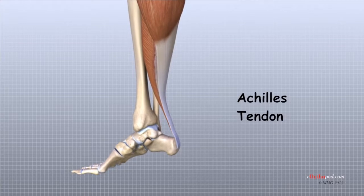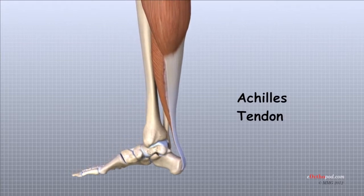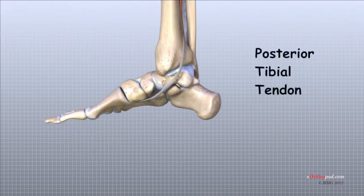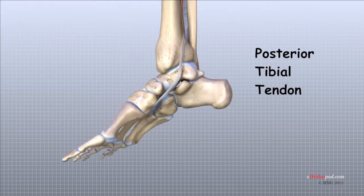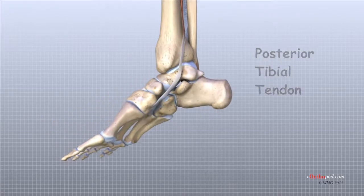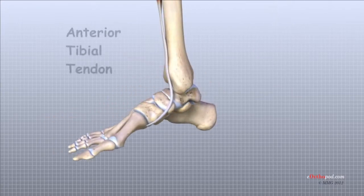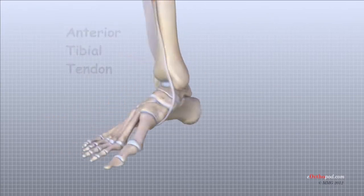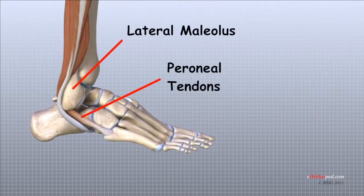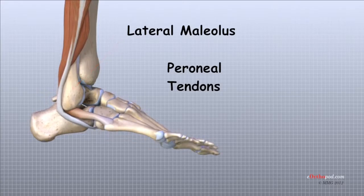The large Achilles tendon is the most important tendon for walking, running, and jumping. It attaches the calf muscles to the heel bone to allow us to raise up on our toes. The posterior tibial tendon attaches one of the smaller muscles of the calf to the underside of the foot, helping support the arch and allowing us to turn the foot inward. The anterior tibial tendon allows us to raise the foot. Two tendons run behind the outer bump of the ankle, called the lateral malleolus, and help turn the foot outward.